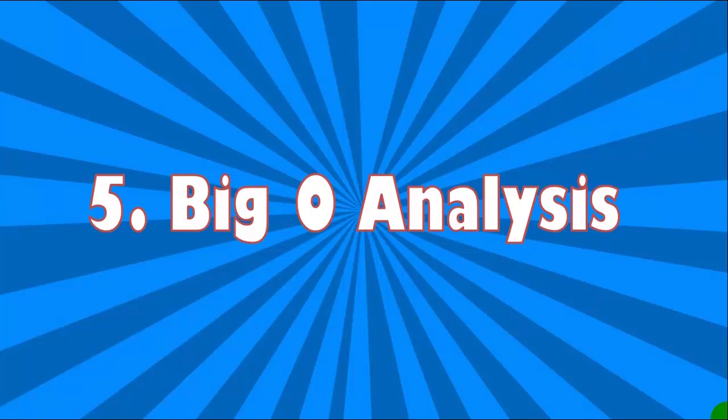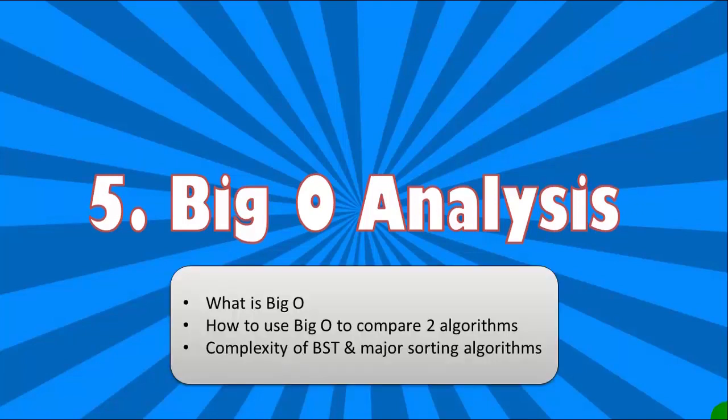Number five, Big O analysis. At a minimum you need to know what is Big O, how to use Big O to compare different algorithms so that you can compare their performance, the relative performance of two algorithms, and you should know the complexity of binary search tree or major sorting algorithms. What is the Big O analysis and how does it apply to simple algorithms and programs?